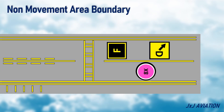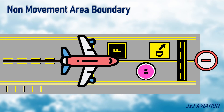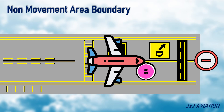The non-movement area boundary marking consists of a solid yellow line and a dashed yellow line. This marking is on the boundary of movement and non-movement areas. Non-movement areas are sections into which an aircraft should not enter. The solid line is on the non-movement area side, and the dashed line is on the movement area side.